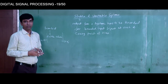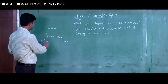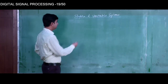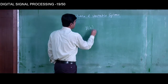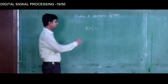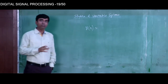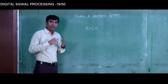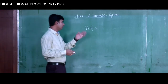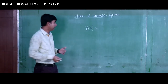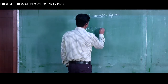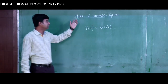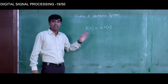Otherwise the system is unstable. Now let us take an example. As we are discussing discrete-time systems — digital signal processing deals with digital signals, which are discrete-time signals — we will take a discrete-time system represented by y[n] and x[n]. Let the system equation be y[n] = n·x[n].